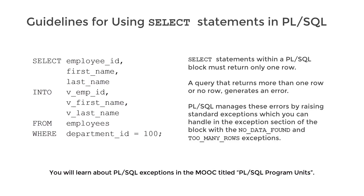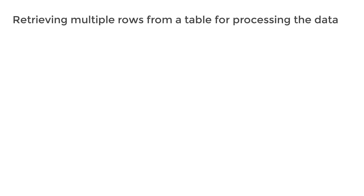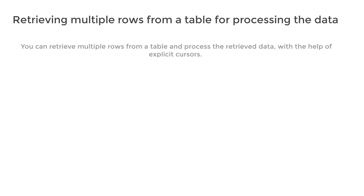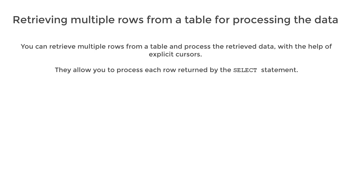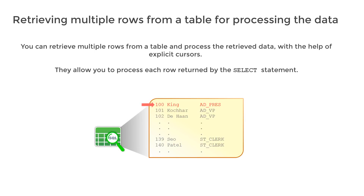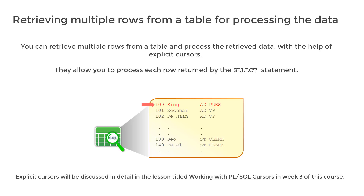You will learn about exception handling in the MOOC titled PL-SQL Program Units. If you're wondering whether there is any possibility to retrieve multiple rows from a table and process that data in a PL-SQL block, yes, it is possible with the help of explicit cursors. They allow you to process each row returned by the SELECT statement. An explicit cursor actually points to a SQL private area where all the rows returned by the SELECT statement are stored temporarily. You can fetch each record from the cursor into a set of PL-SQL variables, a single PL-SQL record, or any other PL-SQL composite data types for processing. This will be discussed in the lesson titled Working with PL-SQL Cursors in week 3 of this course.